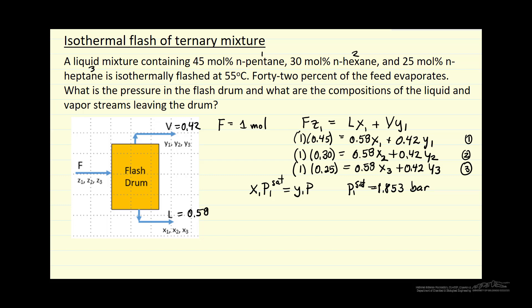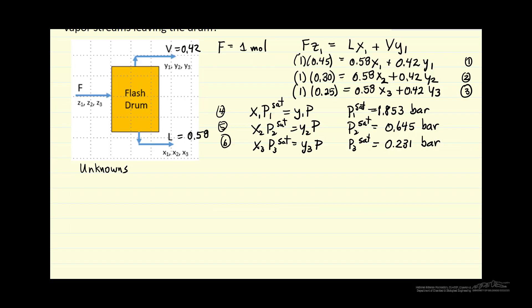So I've numbered the equations 1 through 6 so far, so let's look at the unknowns that we have. So we don't know the liquid phase mole fractions, and likewise the vapor phase mole fractions, and the pressure. So 7 unknowns. Right now we have 6 equations.